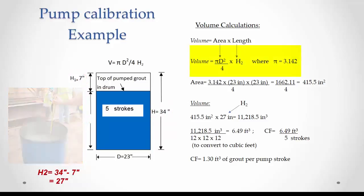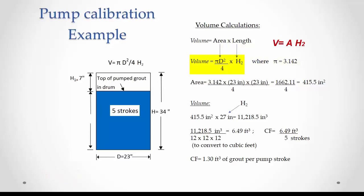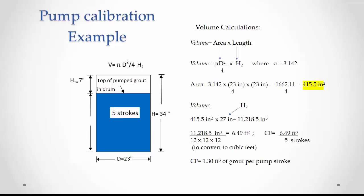With these dimensions, he can compute the volume that was grouted. Volume equals the area of the circle times H sub 2. The area of the circle is 3.142 times 23 squared divided by 4, which equals 415.5 square inches.